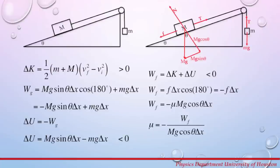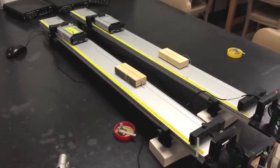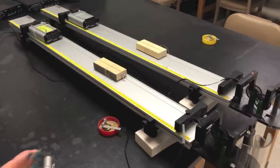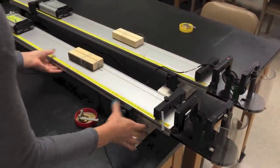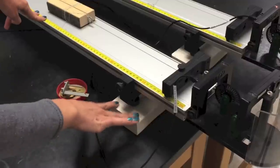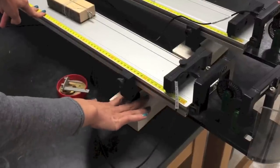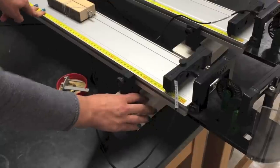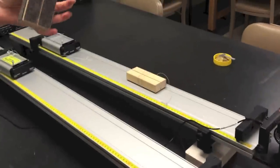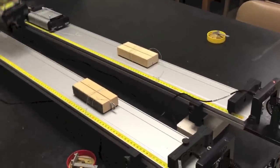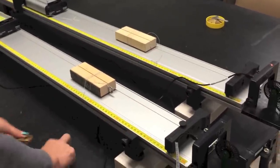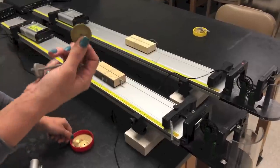At this point, you have all the information needed to complete this week's experiment. Next is a demo on data collection and data analysis for the work-energy experiment. This week's setup is the same as during the week when you did the second Newton's law experiment.